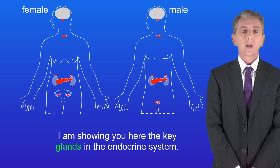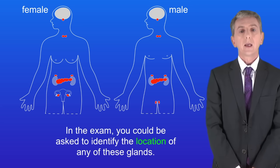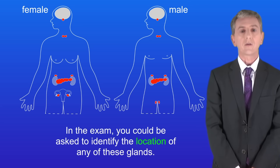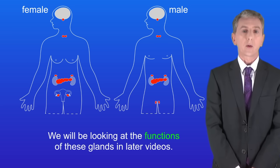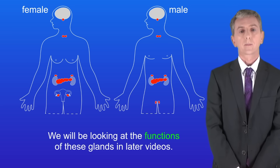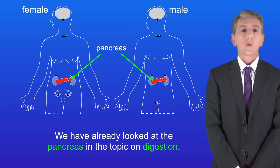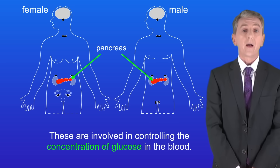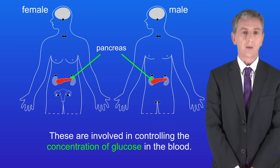Here are the key glands in the endocrine system and it's important that you learn this. In the exam you could be asked to identify the location of any of these glands — we'll be looking at the functions of these glands in later videos. We've already looked at the pancreas in the topic on digestion. However the pancreas also releases hormones which are involved in controlling the concentration of glucose in the blood.